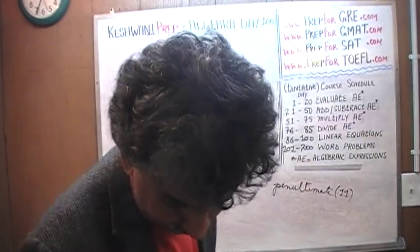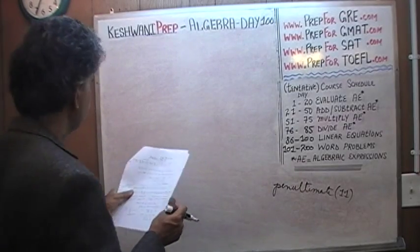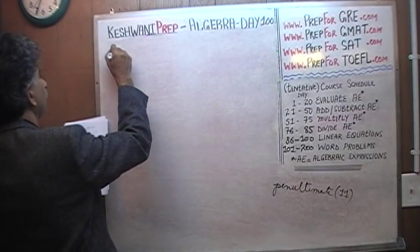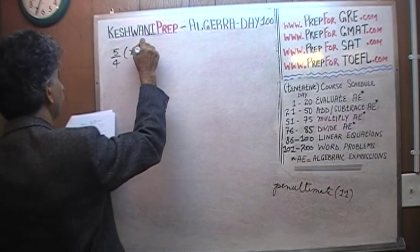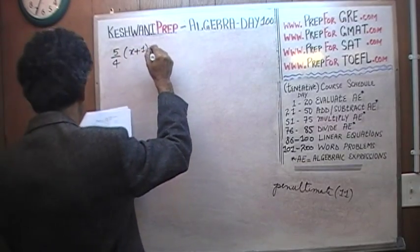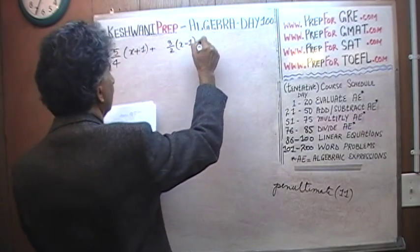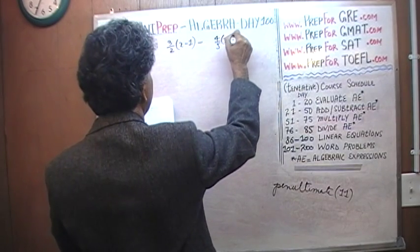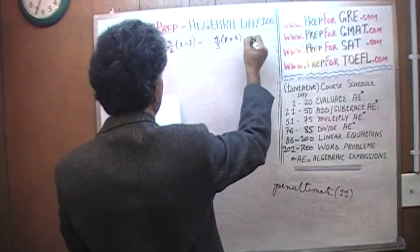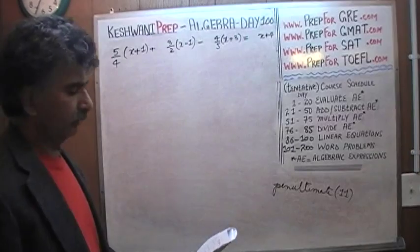Let's see what we have for today. We have a linear equation, obviously, and we have to solve it, obviously. Here is the equation. It looks kind of nasty: five-fourths times (x plus 1) plus three-halves times (x minus 1) minus four-fifths times (x plus 3) equals x plus 4. I am going to read this to you one more time.